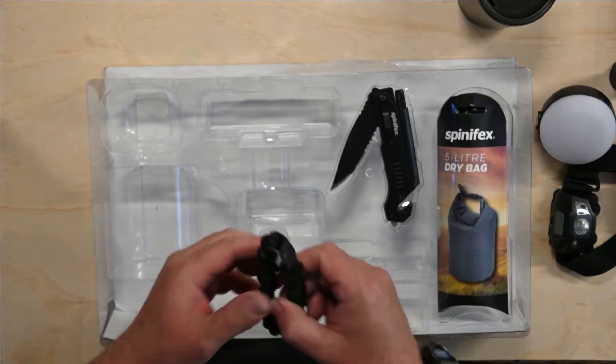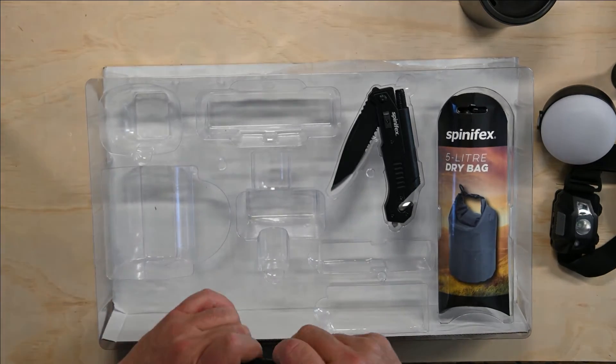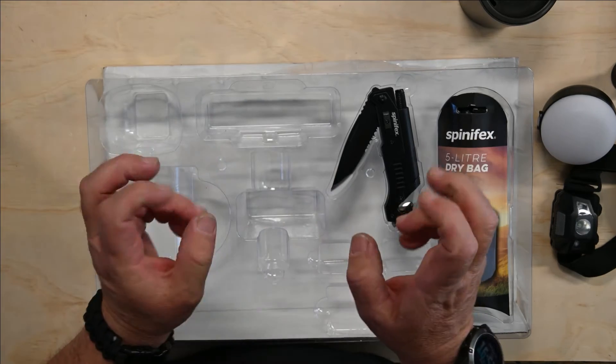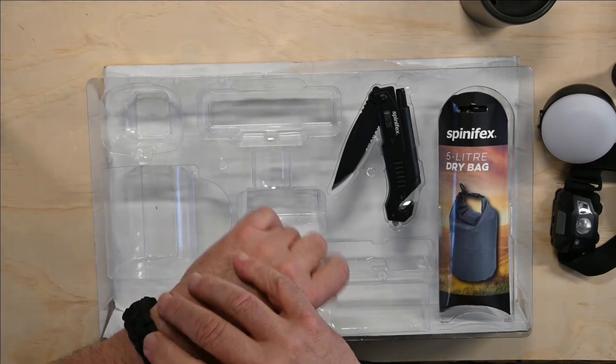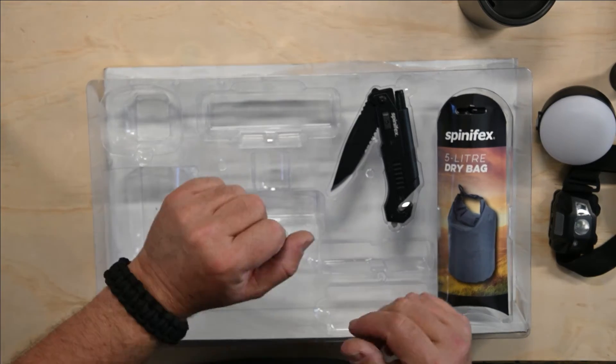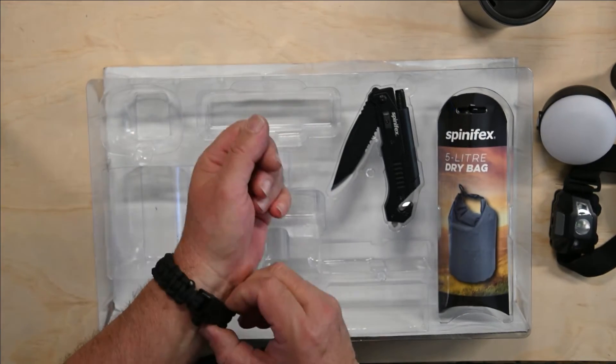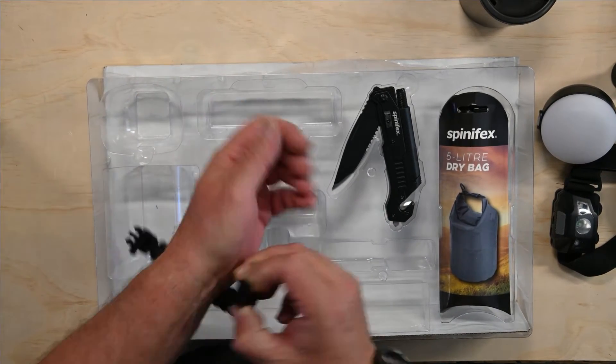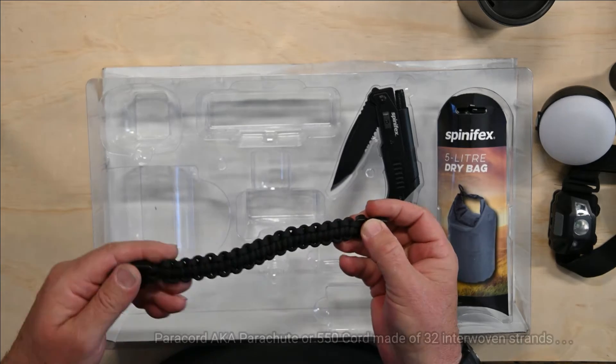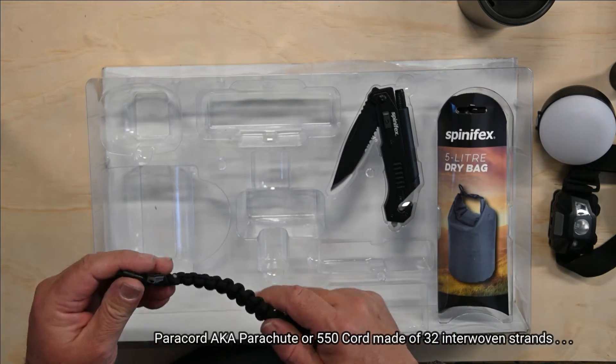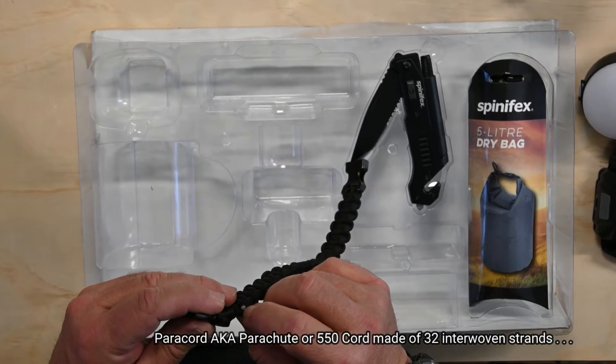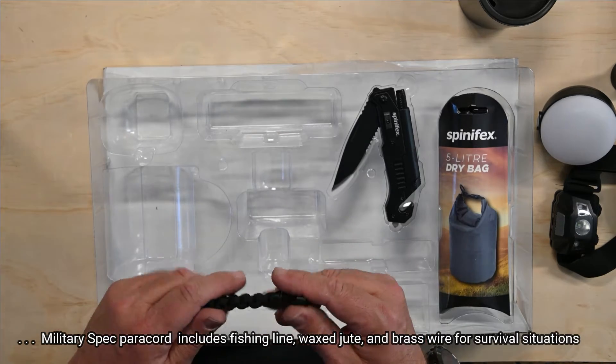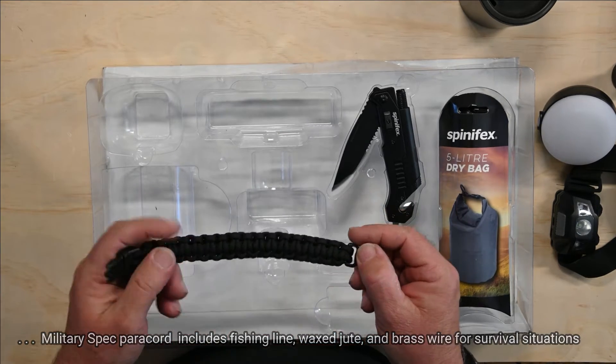There's also a little paracord bracelet. Seen lots of survival channels have these, and it seems to be, if you have one of these, you can survive. I don't know what we're surviving, and I don't know for how long, and I don't know how many people, but hey, on its own, this is great. There's quite a few metres of paracord there, and they've heat sealed the ends. Unfortunately, I can't show you what paracord is made of from there.